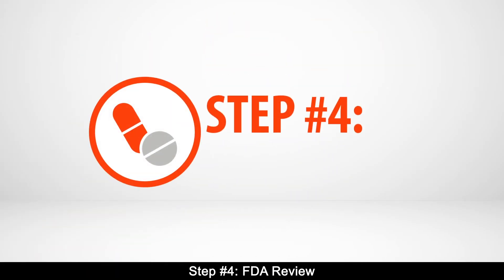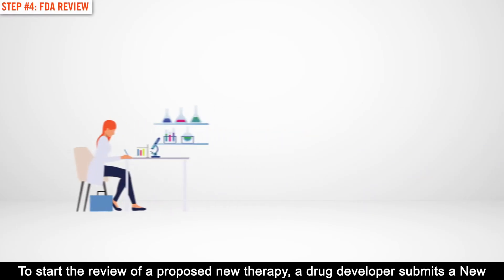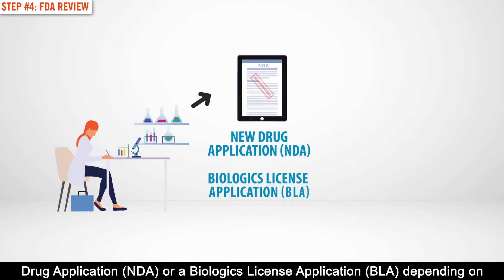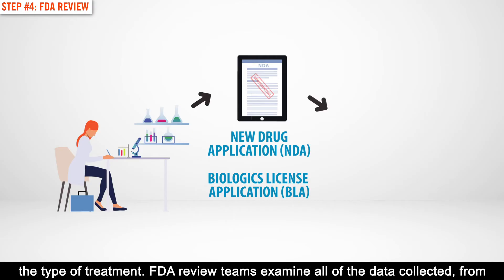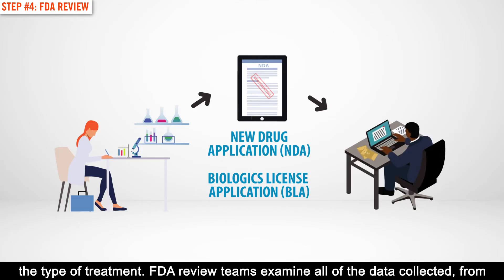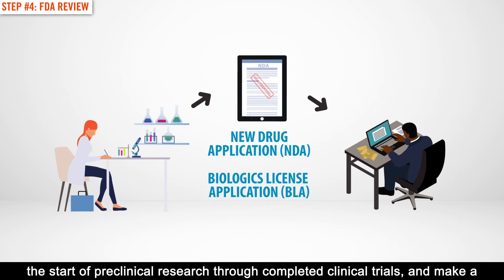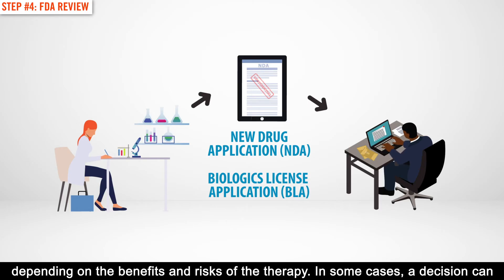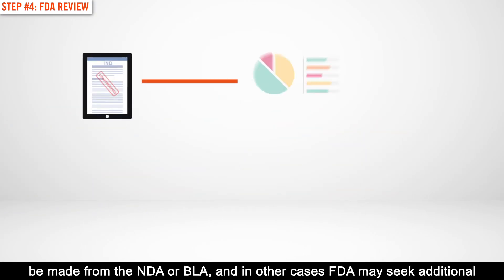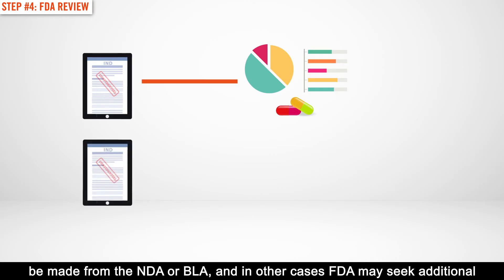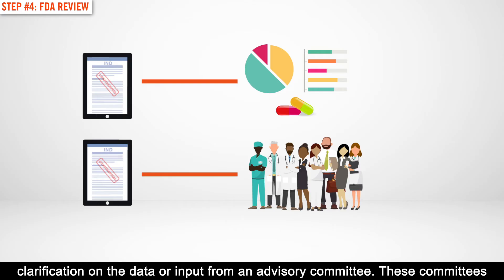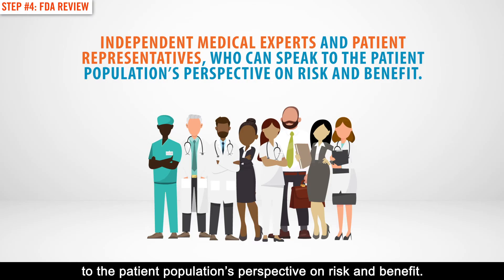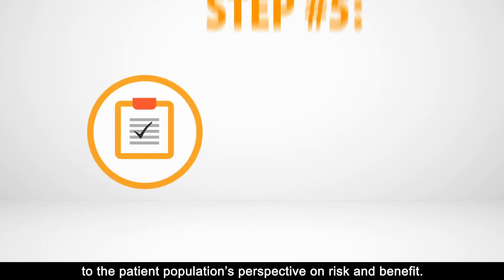Step number four: FDA Review. To start the review of a proposed new therapy, a drug developer submits a New Drug Application (NDA) or a Biologics License Application (BLA), depending on the type of treatment. FDA review teams examine all of the data collected from the start of pre-clinical research through completed clinical trials and make a decision to approve or not approve the drug for a proposed population based on the benefits and risks of the therapy. In some cases, the FDA may seek additional clarification on the data or input from an advisory committee, which includes independent medical experts and patient representatives who can speak to the patient population's perspective on risk and benefit.